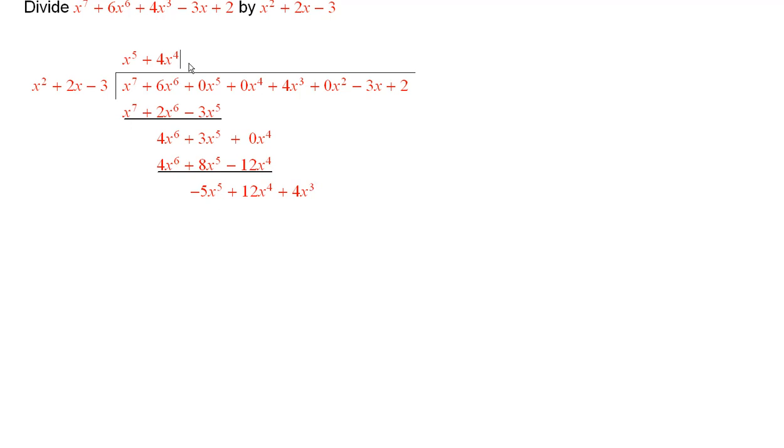So the next term will be minus 5x to the 5th. I mean 5x to the 3rd. Because you see you have to put whatever it is here. When you multiply this term by this, you want to get the same thing that you have here. So you put in minus 5x to the 3rd. And there you have what results when you multiply by it. So now I will subtract.